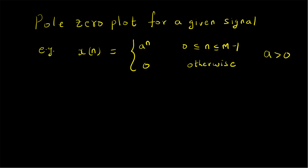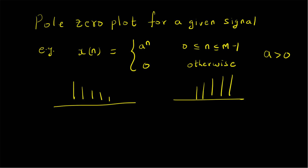If the value of a is less than 1, then this is basically a decaying signal within a small window of size M, that is for M values. If a is greater than 1, then this is an increasing function, but it is still a finite-valued function from 0 to M-1. The signal will have a structure either like this or like this, but the signal is still finite.